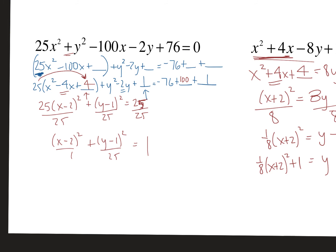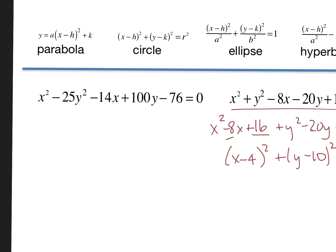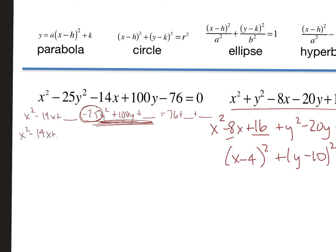Last is the hyperbola. I can tell it's a hyperbola because of the subtraction between the squared terms. I do the same housekeeping: put x² terms together with their blank, minus 25y², put y terms together with their blank, then move the constant over. There's the same issue — a 25 coefficient on the y terms — so I factor out a negative 25, giving −25(y² − 4y + blank). Watch the signs carefully.